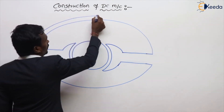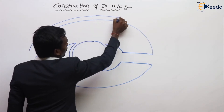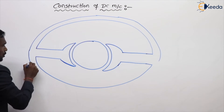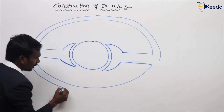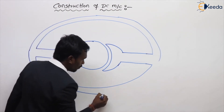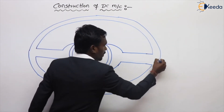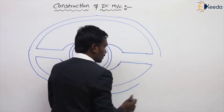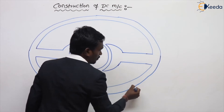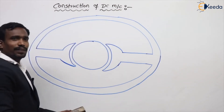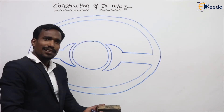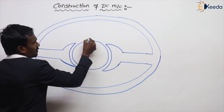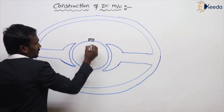The outer part of my DC machine is like this. Can you tell me what it is called? The outer part of the DC machine is called the yoke. So this is my yoke. Here, some brushes are there — these are my brushes.